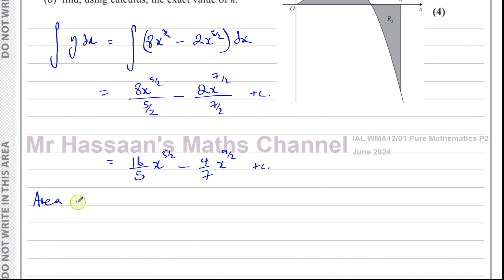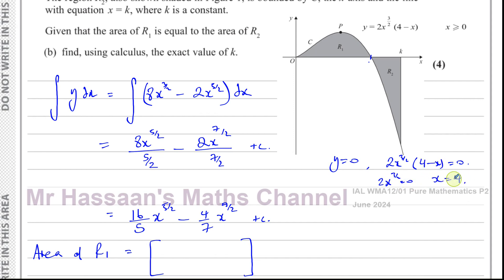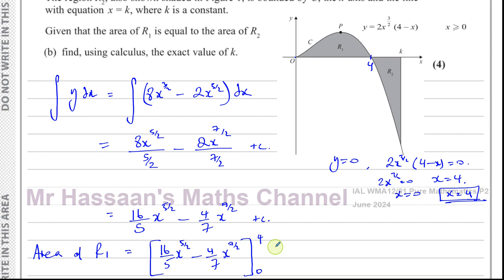The area of R1 is the definite integral between 0 and 4. The upper limit is 4 because the curve meets the x-axis where y equals 0: setting 2x to the 3 over 2 times (4 minus x) equals 0 gives either x equals 0 or x equals 4. So I evaluate the integrated expression with limits 0 to 4, which gives the area of R1. Substituting 0 gives 0, so the area equals the expression evaluated at x equals 4.